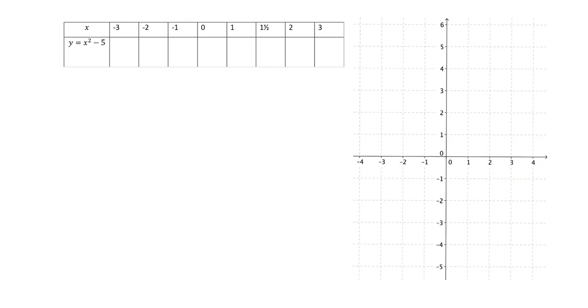What we're going to look at now is how we can bring together graphs in the Cartesian plane, equations and tables of value, how they can all tell exactly the same story. So let's have a look at this example. We've got an equation y equals x squared minus 5 and you've had lots of practice in filling in a table of values for that.